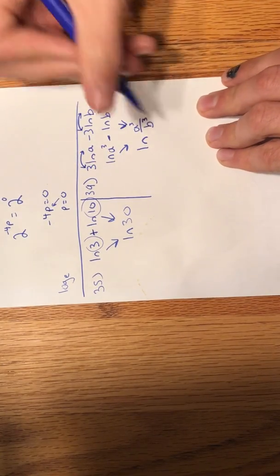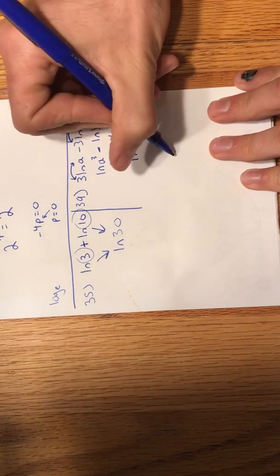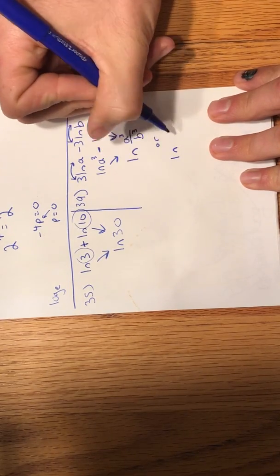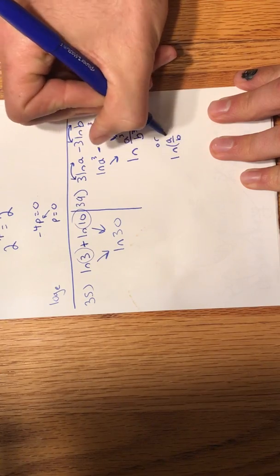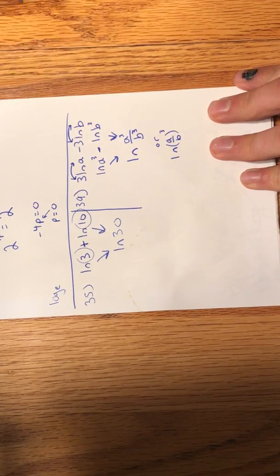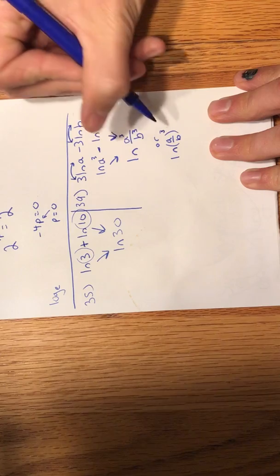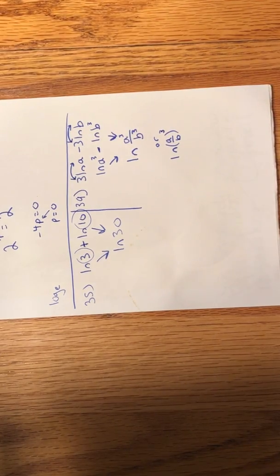And that would be an acceptable final answer. Or if you wanted to make that a little prettier, you could say that's the natural log of A over B quantity cubed. And same thing. So there you have it.